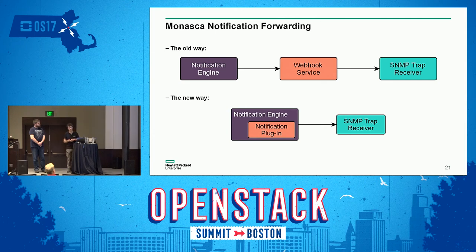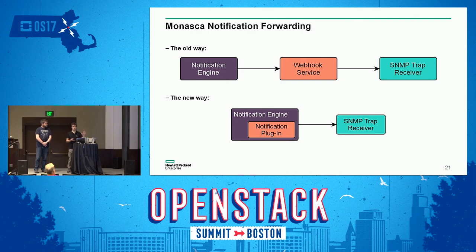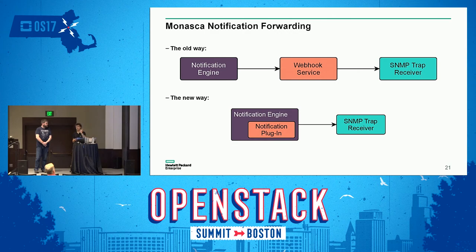In the meantime, I also developed the notification plugin, which is a little bit different because more information is available. Instead of just mapping the customer's request to the SNMP trap, the MIB actually maps everything available in the notification data to an SNMP trap. I think that's a better solution.